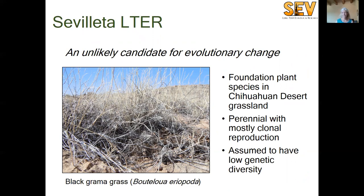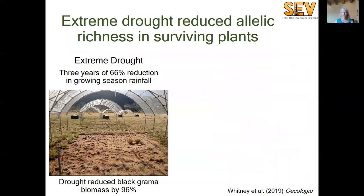Black grama is certainly not the first plant species you'd choose to study evolution. It's a perennial with mostly clonal reproduction as stolons, and it's assumed to have low standing genetic diversity because of this life history. However, clonal populations may be highly sensitive to environmental disruptions if low standing genetic diversity provides little buffer against change. We imposed three years of experimental drought involving 66% less rain during the growing season, and drought reduced black grama biomass more than 90% relative to control plots. You can see that from this picture here — we're in the foreground looking at a plot that has been under a drought shelter.